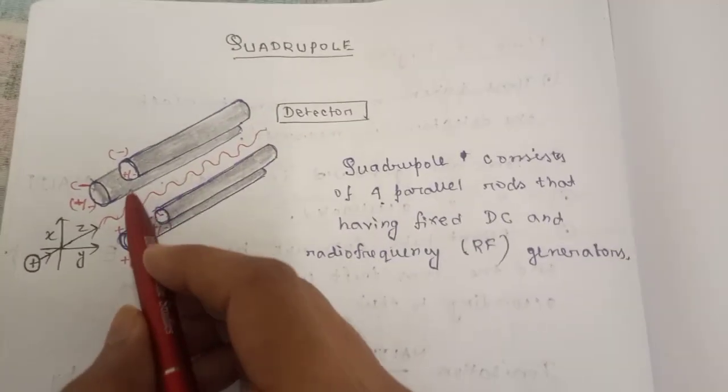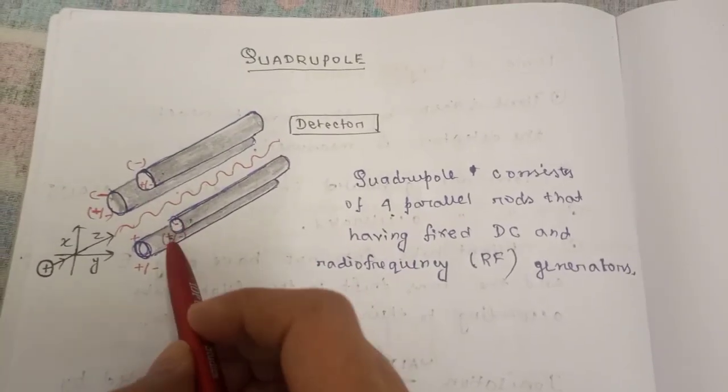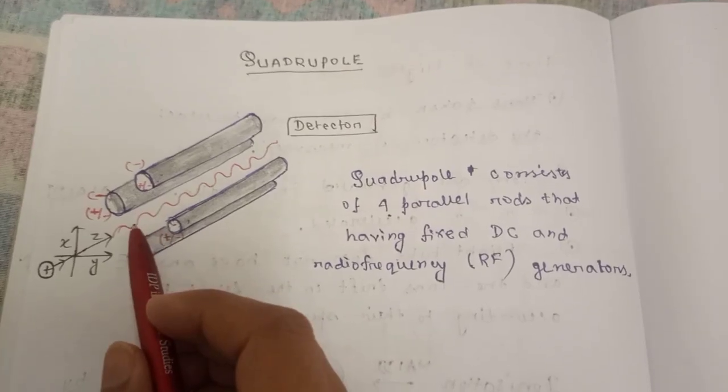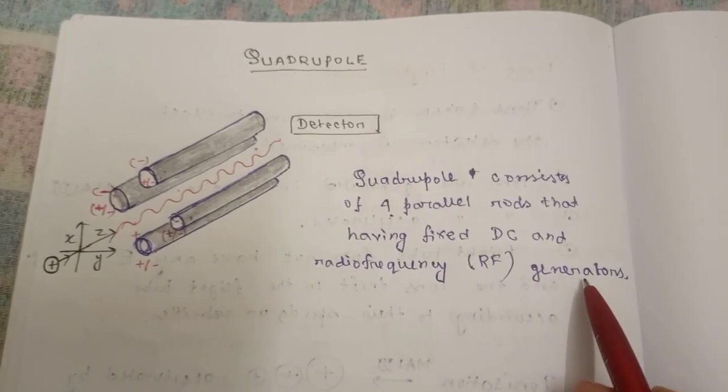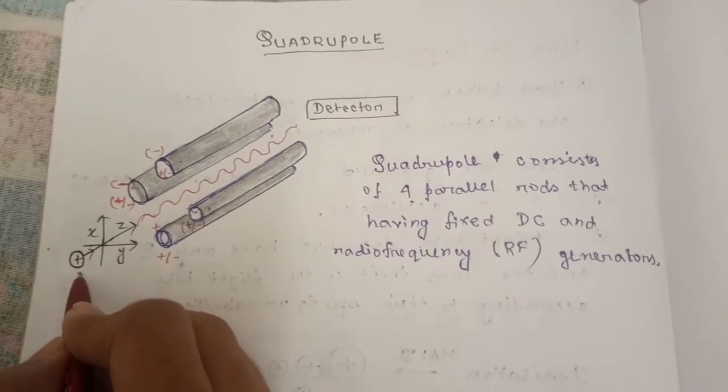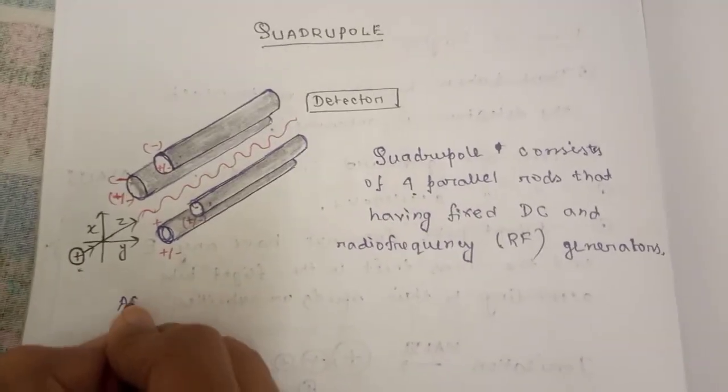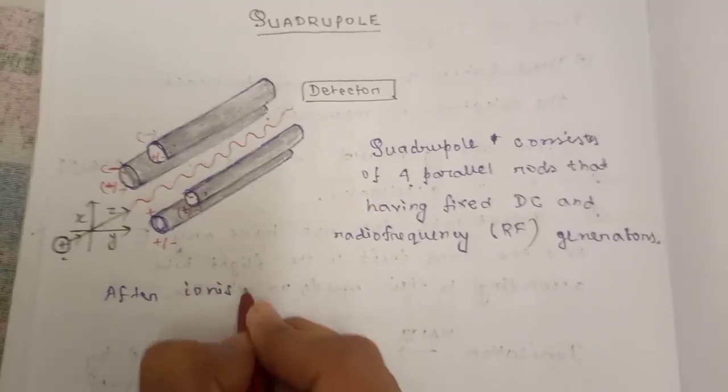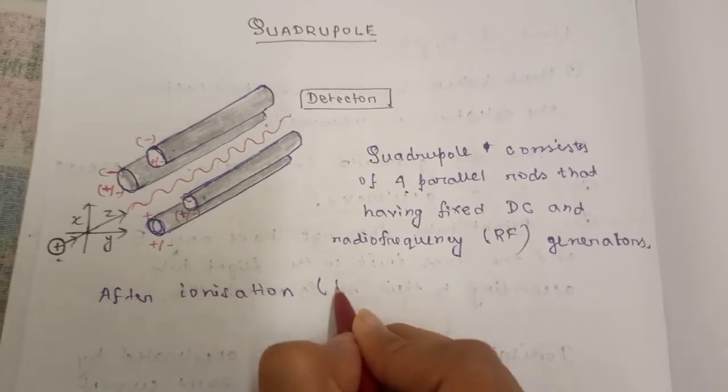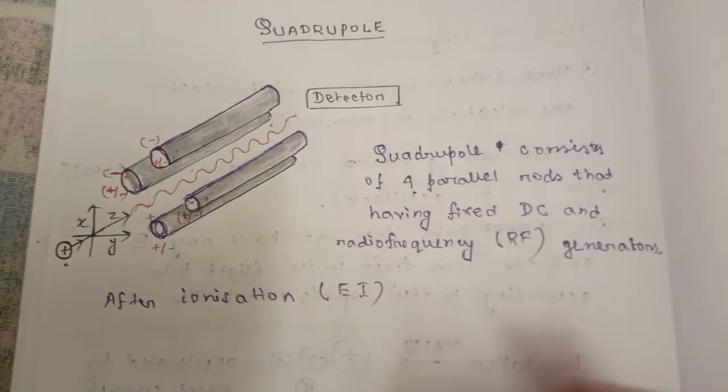Here you can see in this image that these are four rods, and they are fixed with some DC and radio frequency generators. Now the ions after ionization, mainly here the electron ionization technique is used.